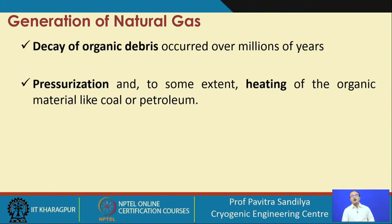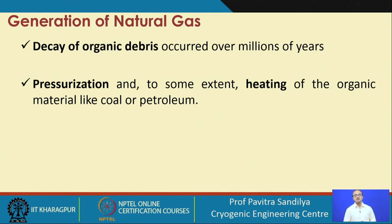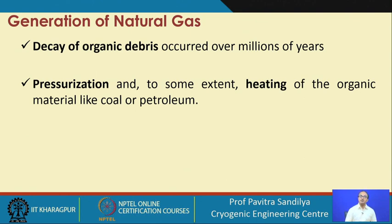Let us now see how natural gas is generated in nature. It may have different sources. First is the decay of organic debris which has been accumulating under the sea over a long period of time since the birth of the earth. Under the sea, due to large pressure and heat from geothermal energy, they convert the big molecules and break them into smaller gas molecules — basically hydrocarbons — which are taken out as natural gas.